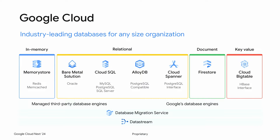Google Cloud offers one of the most differentiating portfolios of database services. We are extremely committed to open source and open standards, working closely with popular open source database engines such as MySQL, Postgres, and Redis. If your use case needs microsecond-level latency, Memorystore is a great managed option. We offer four Google-native databases: Bigtable for high-performance real-time data serving, Firestore for NoSQL document databases, and Spanner for highly partitioned, high-scalability, high-availability workloads.